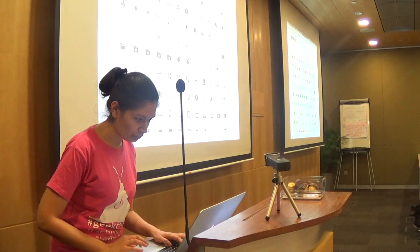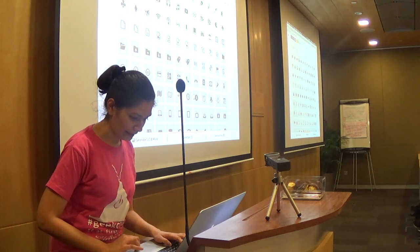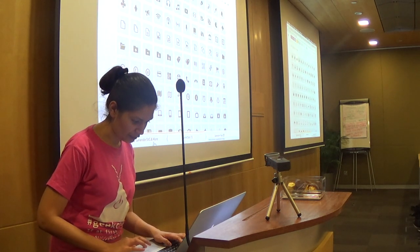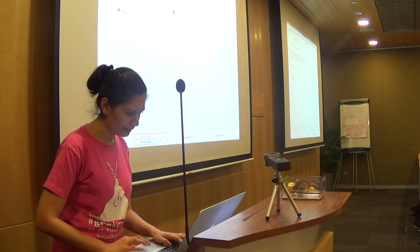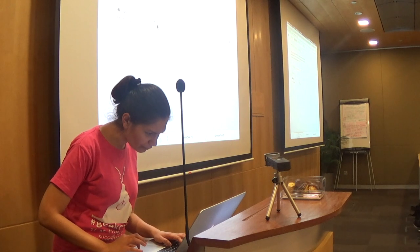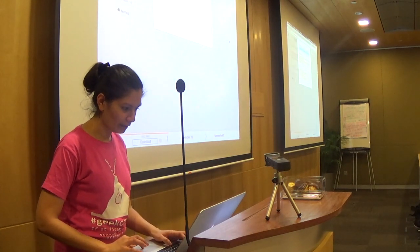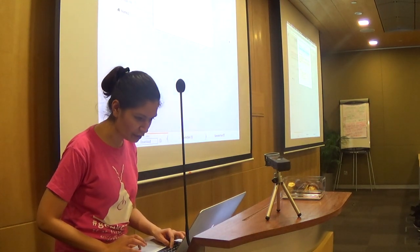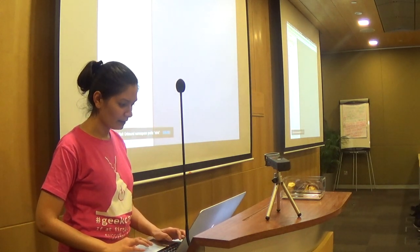So I selected an icon — say, this house — generated the SVG, and downloaded the code. I then pasted the SVG markup into the optimizer.